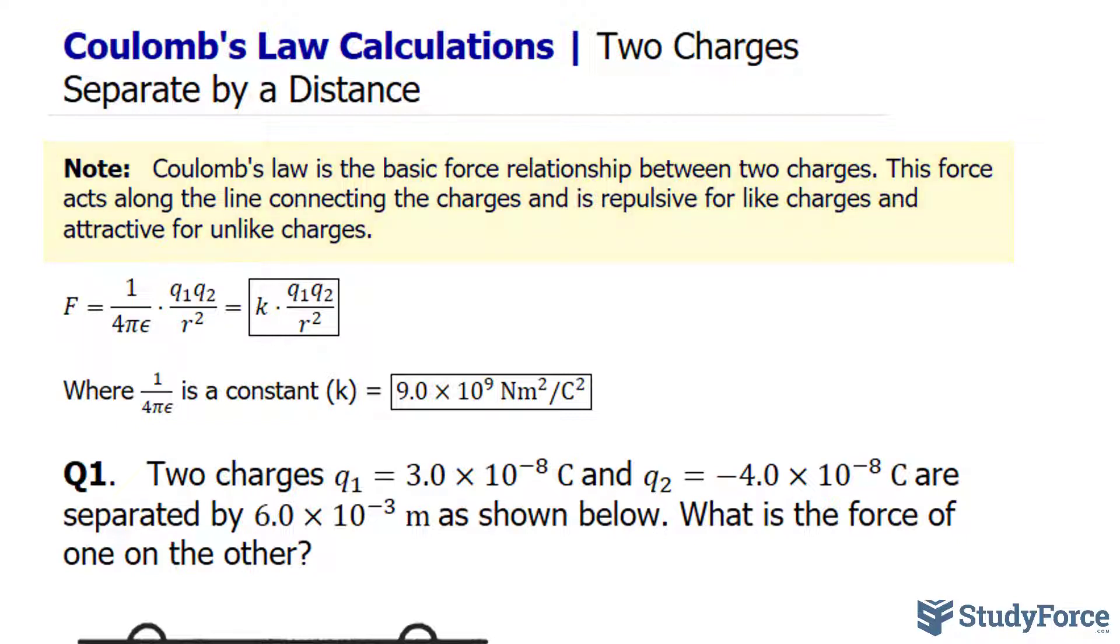The formula is commonly written as F equals k, which is a constant, shown right here, times q1 times q2 over r squared, where r represents the distance between the centers of the two charges.